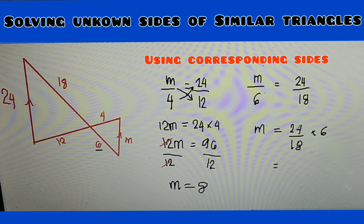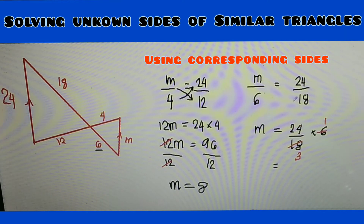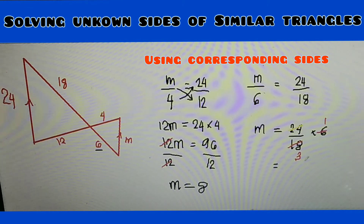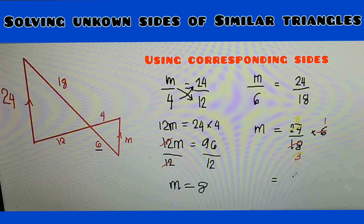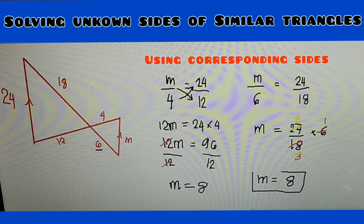18 and 6: 18 and 6 — this will become 1, 18 divided by 6, what's left is 3. Okay, and then 24 and 3 — I'll use another color — 24 and 3: yes, 24 divided by 3 is 8, and 3 becomes 1. So what's left is 8. Therefore m is equal to 8. We applied cancellation so that it's easy.